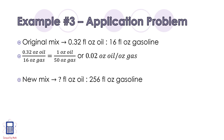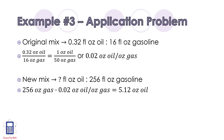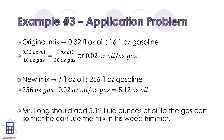I don't know the amount of oil I need, but I do know that I have 256 fluid ounces of gasoline. So if I multiply 256 fluid ounces of gas times 0.02 ounces of oil for every 1 ounce of gas, I get 5.12 ounces of oil. This means that I should add 5.12 fluid ounces of oil to the gas can so that I can use the mix in my weed trimmer.